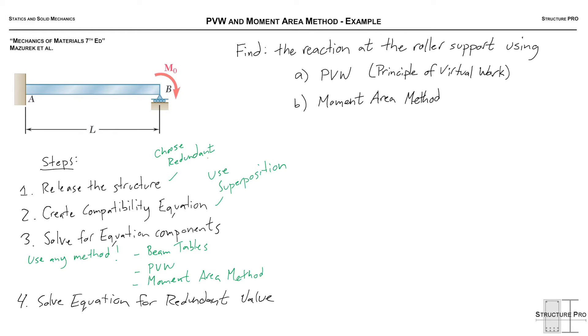But when we're solving for the equation components we can use any method to get these values. Beam tables, principle of virtual work, virtual work, moment area method, and the latter two we're going to be using right now. So yeah, and then number 4, when you have the equation components you can just solve the equation for the redundant value. Okay, now we have our steps. That's very nice, peace of mind. We know where to start with our solution. So first things first, let's release the structure.